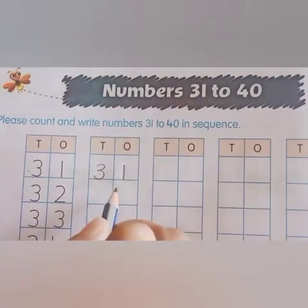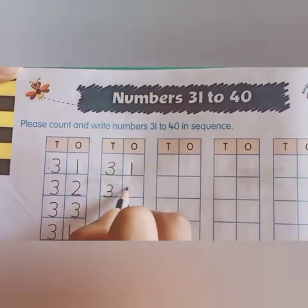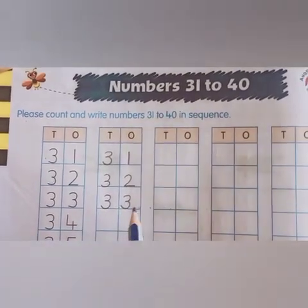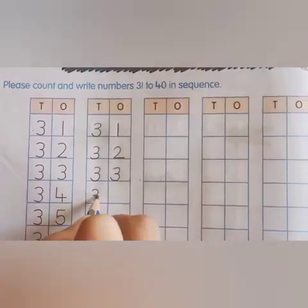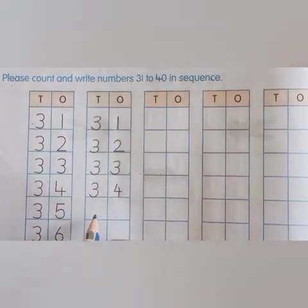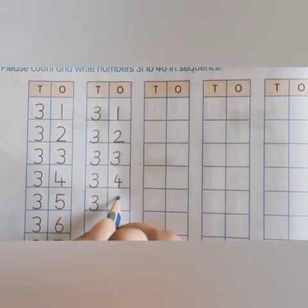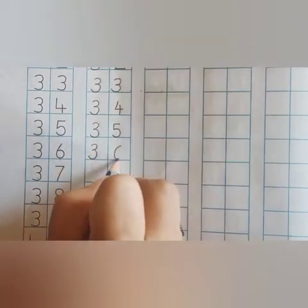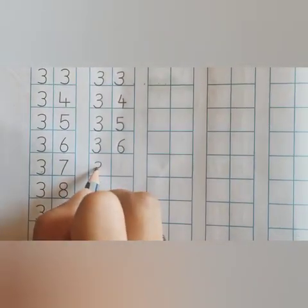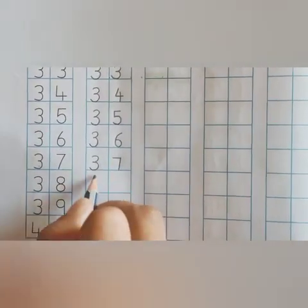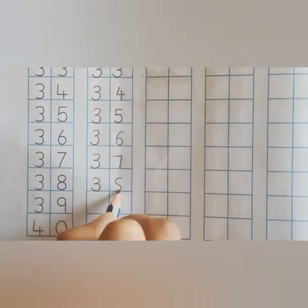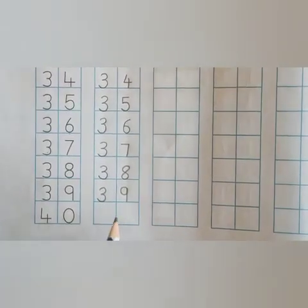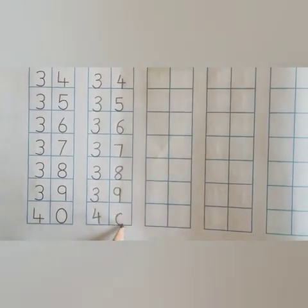Which number comes after 31? 32. After 32? 33. Speak and write, students. 34. After 34? 35. After 35? 36. After 36? 37. After 37? 38. After 38? 39.